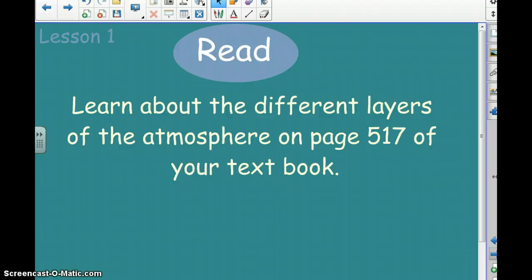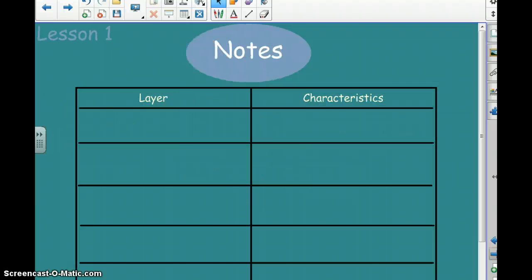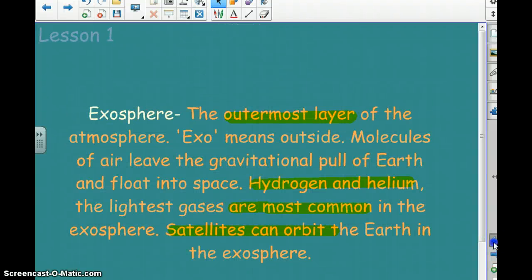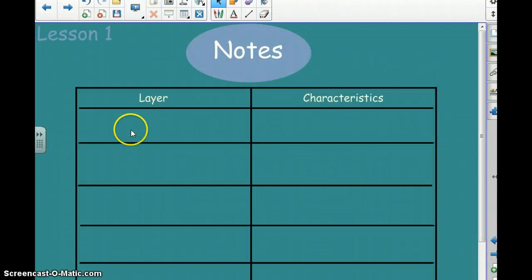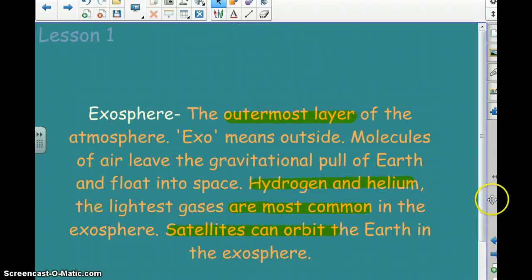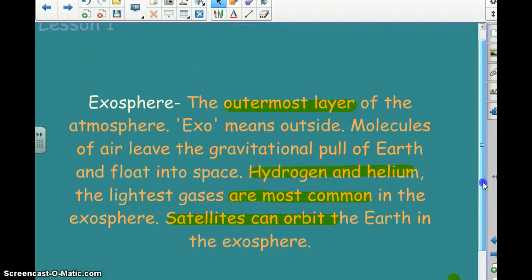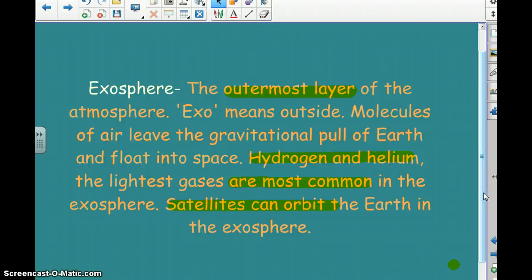So in your book, if you go online, you can look at your book on page 517 and you can see all the different layers and learn more information about them. You will eventually, on an assignment, have to name the layers here and write at least two characteristics of each one here. So hopefully you're taking good notes coming up and you're going to have a good set of notes to use from. So the exosphere, that's our top layer, it's the outermost layer. Exo means outside.